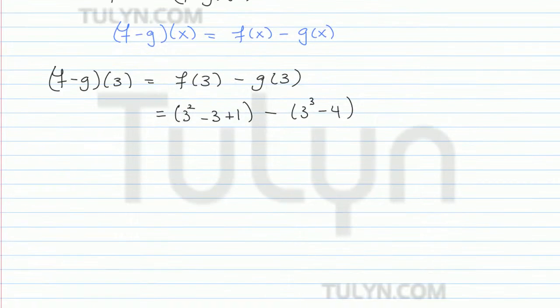Now we can just simplify and evaluate. This becomes 3 squared is 9 minus 3 plus 1, minus 3 cubed is 27, because 3 times 3 times 3 is 27, minus 4.